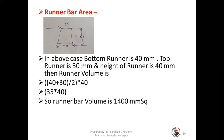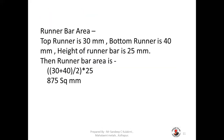The runner bar area is calculated by averaging the runner bar width and then multiplying it with the runner bar height. Let us take another example where the top runner is 30 mm, bottom runner is 40 mm, and height of runner bar is 25 mm. So the runner bar area is (30 + 40) ÷ 2 × 25, that is 875 mm square.